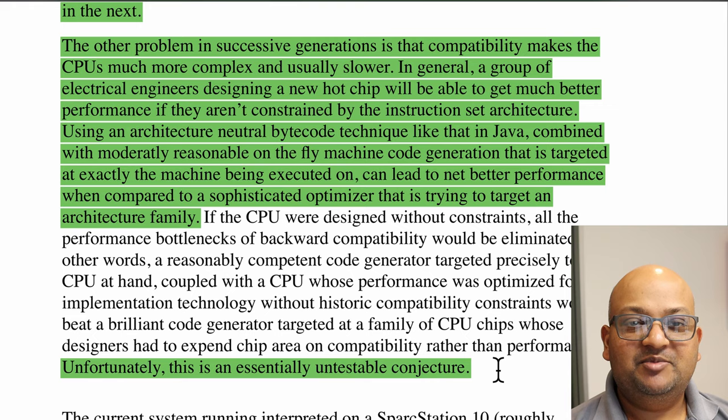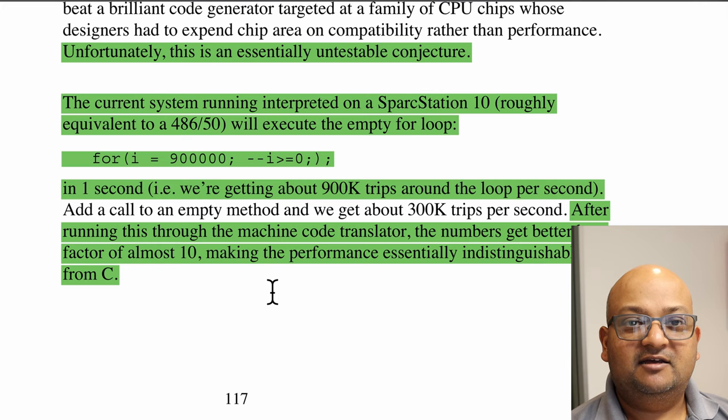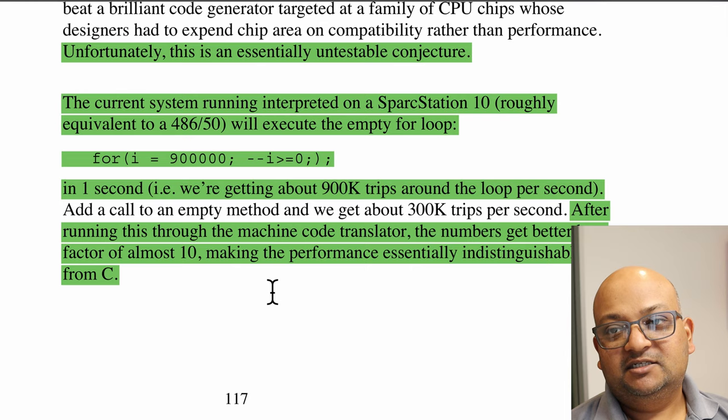Gosling has some very high-level simple benchmarks with a simple loop running over a million times. When it's just purely interpreted, it takes about a second. If you pass it through the on-the-fly machine code compiler, it comes down by a factor of 10, which the author claims is as good as native C compiled code.